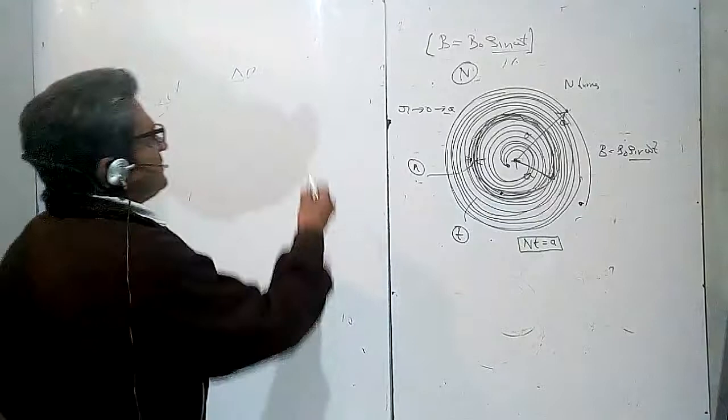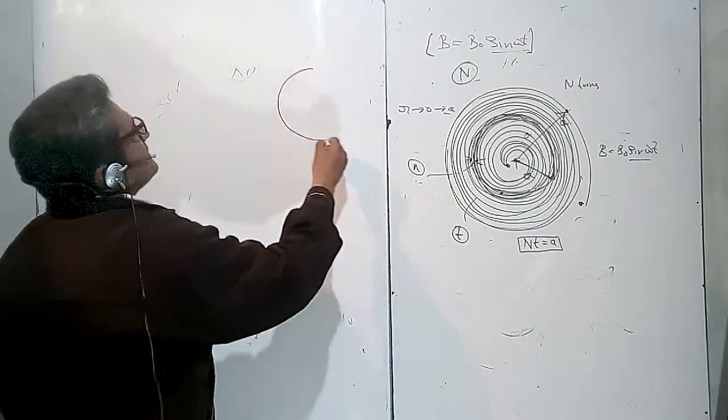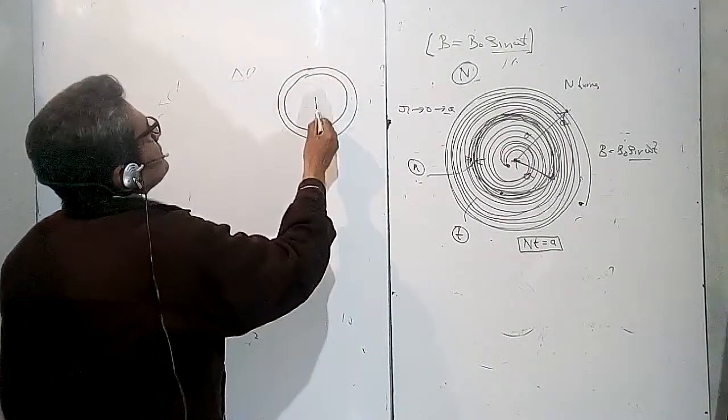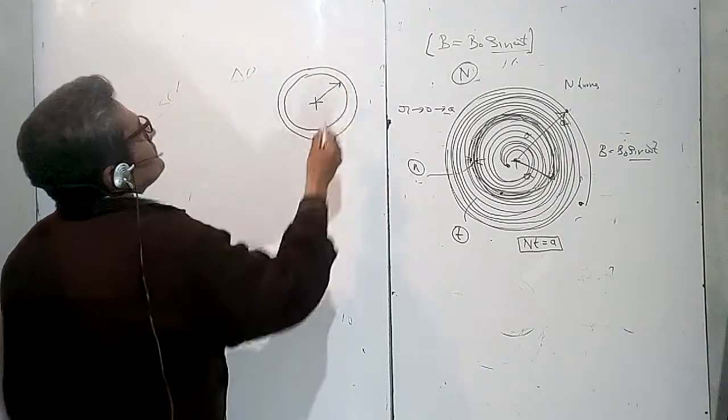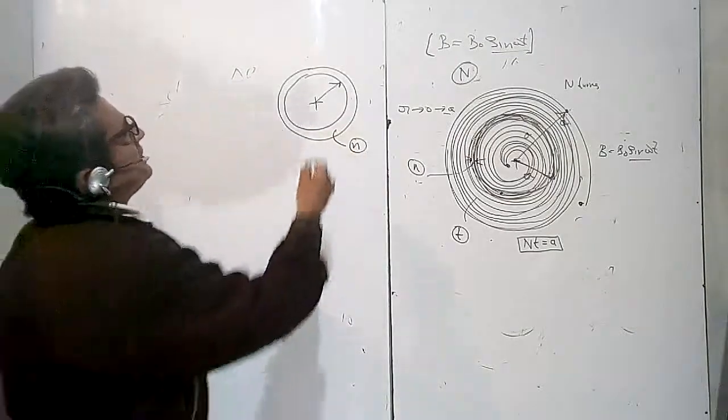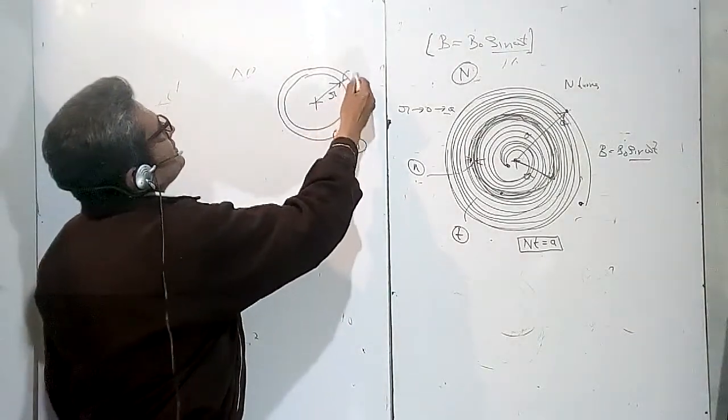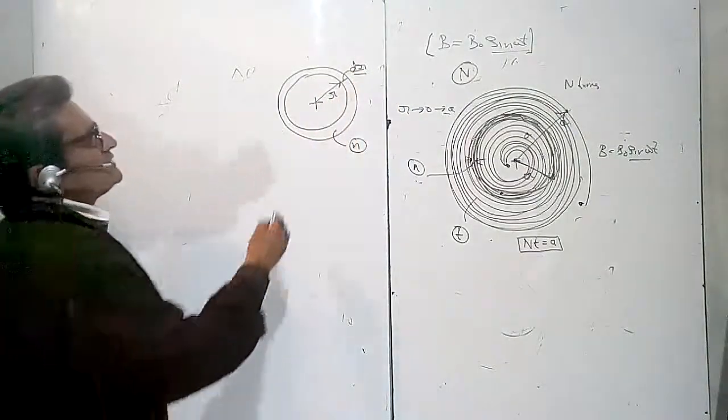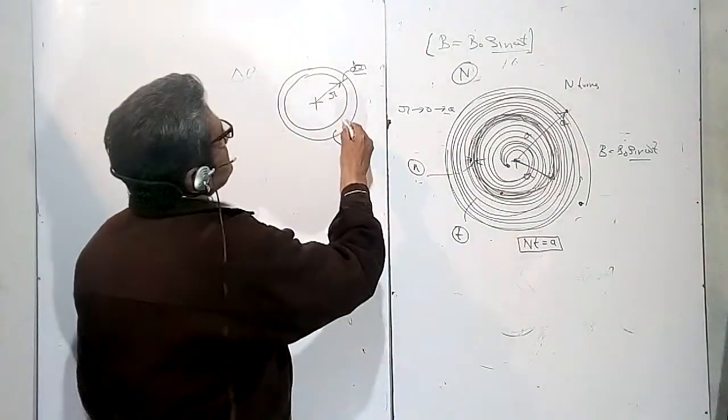Now, if we take a patch from this one, I have cut a patch from R. In this patch, the number of turns is N. This is R and this is dR.